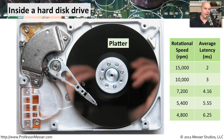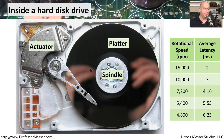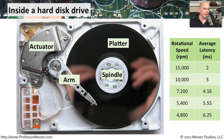First, you can see the platter. Usually there are multiple platters that are spinning around the spindle in the middle, and they're spinning at a very high rate of speed. You have an actuator on the hard drive that controls an arm so it can move back and forth, very much like a record that would have a needle on top of it. Then you have a head at the very end that is reading and writing information from these magnetic platters.